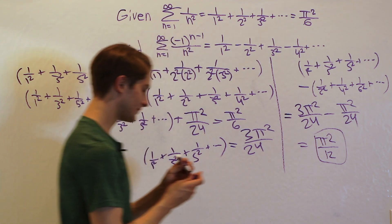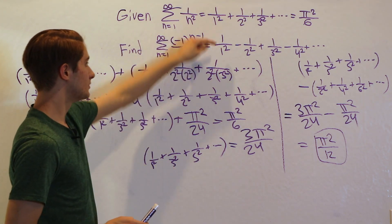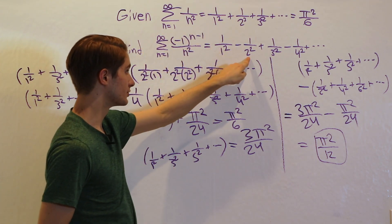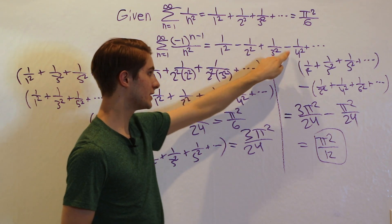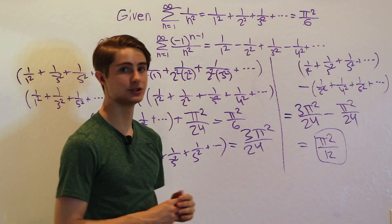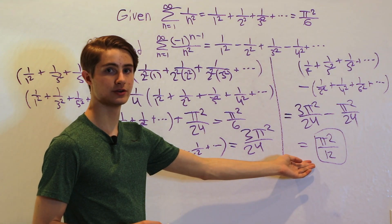That means our original alternating sum — 1 over 1 squared minus 1 over 2 squared plus 1 over 3 squared minus 1 over 4 squared and so on to infinity — is equal to pi squared over 12.